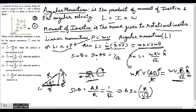Looking at option 4: L = mv/√2 × R · k̂, which is exactly what we got when the particle is moving from D to A. They have taken point A as the reference, measuring distance from the origin to the particle. So this option is correct. Since the question asks for the false options, let's move on.